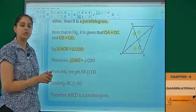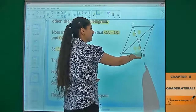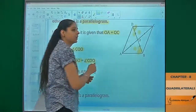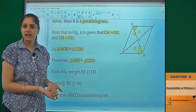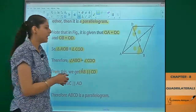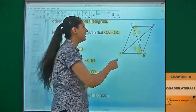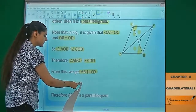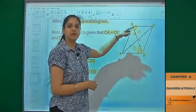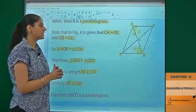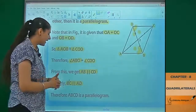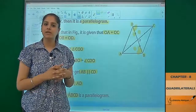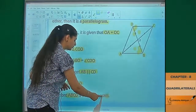We prove that angle ABO is equal to angle CDO — because they are a pair of alternate angles — so we can say that AB is parallel to CD. Similarly, we prove that BC is also parallel to AD. That means ABCD is a parallelogram, because each pair of opposite sides is proved parallel, so it is bound to be a parallelogram.